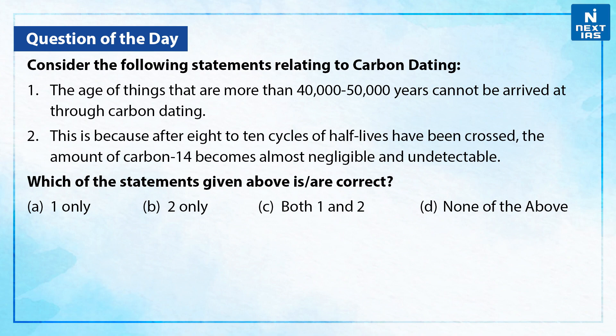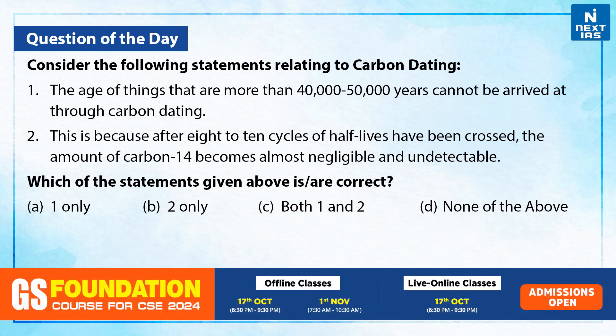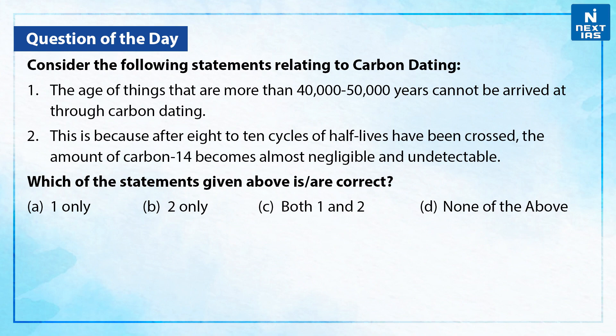Now let us take up one practice question on the same. Consider the following statements relating to carbon dating. First, the age of things that are more than 40,000 to 50,000 years cannot be arrived at through carbon dating. Second, this is because after 8 to 10 cycles of half-lives have been crossed, the amount of carbon-14 becomes almost negligible and undetectable. Which of the statements given above are correct? Both of the statements are correct with respect to carbon dating. Therefore, the correct answer is option C, that is both 1 and 2.